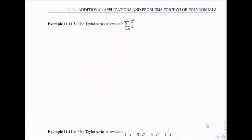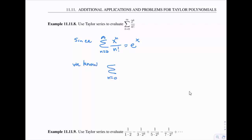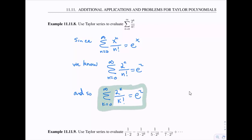Let's write down the justification. Since the Maclaurin expansion for e^x is the sum from n = 0 to infinity of x^n over n! equals e^x, replacing x with 2 gives the sum equals e². Therefore the sum from k = 0 to infinity of 2^k over k! also equals e², since we're just using a different index variable.